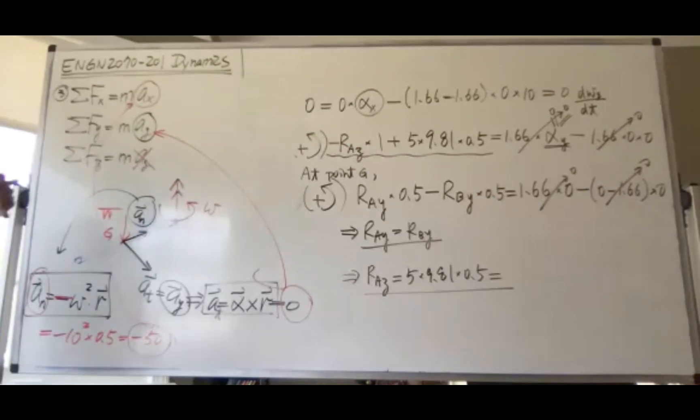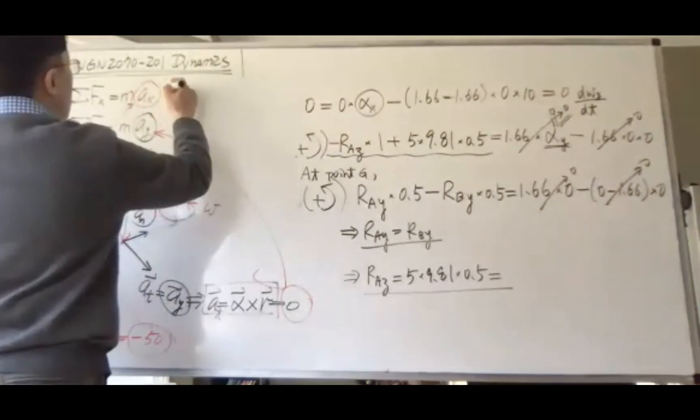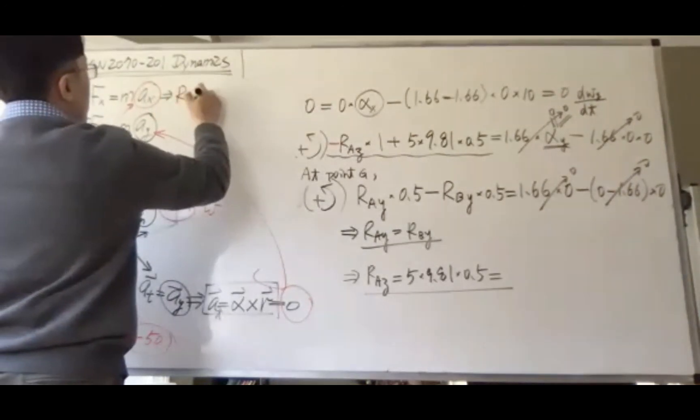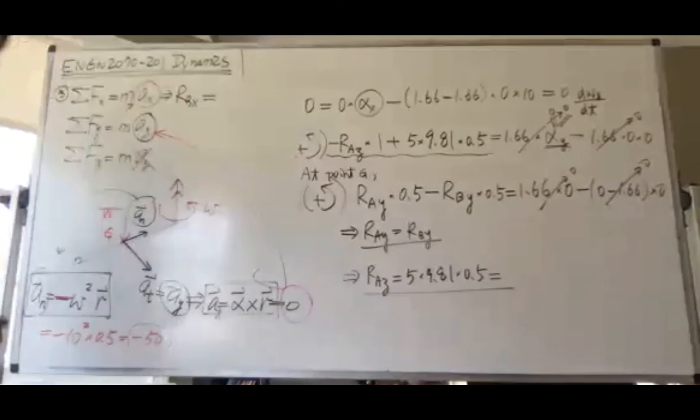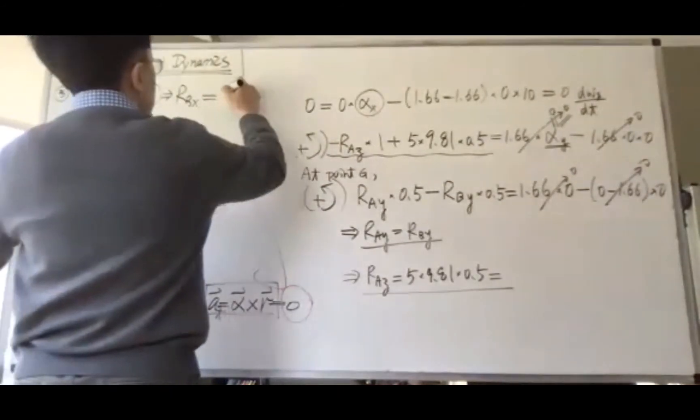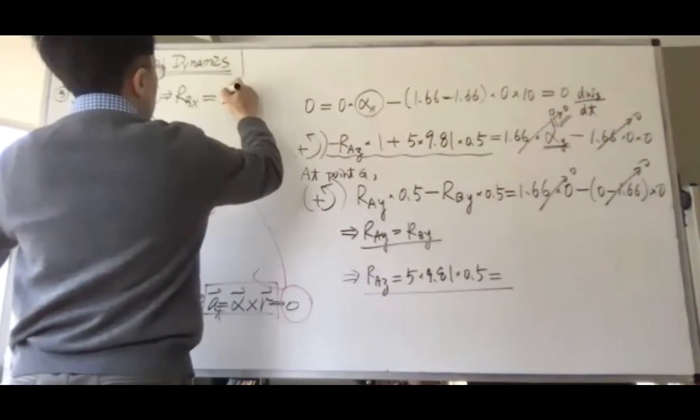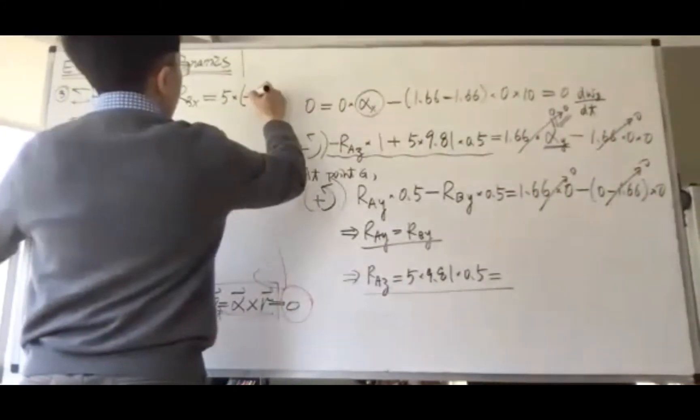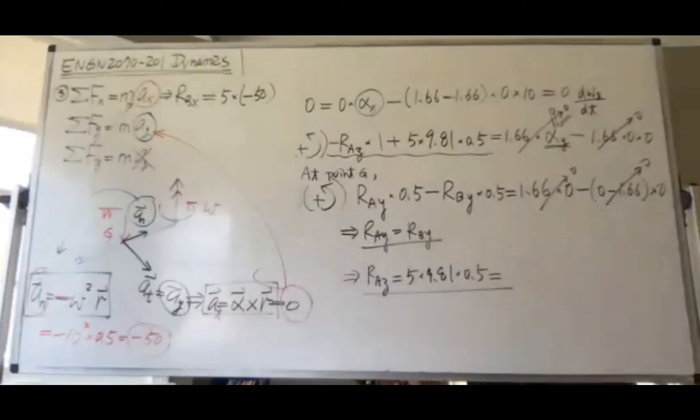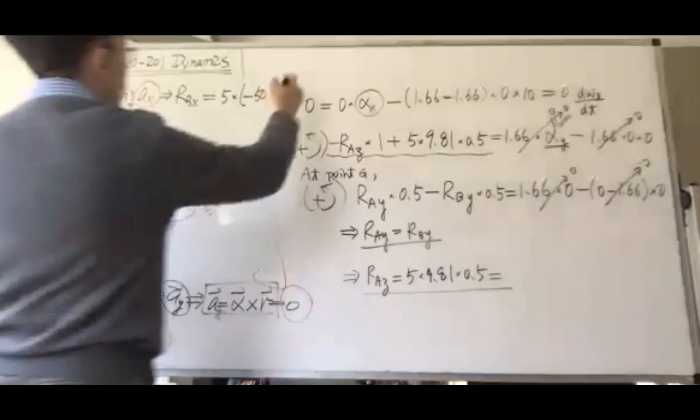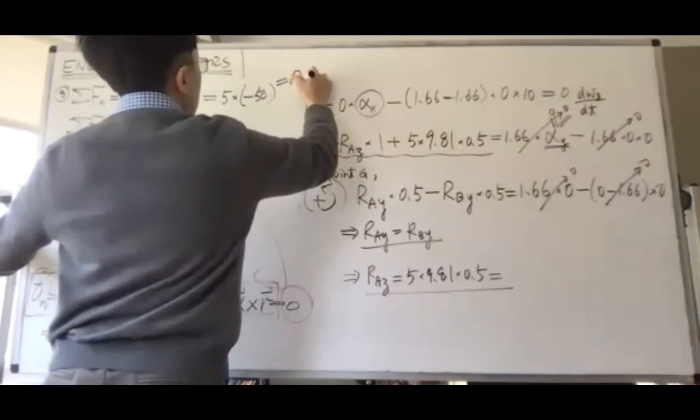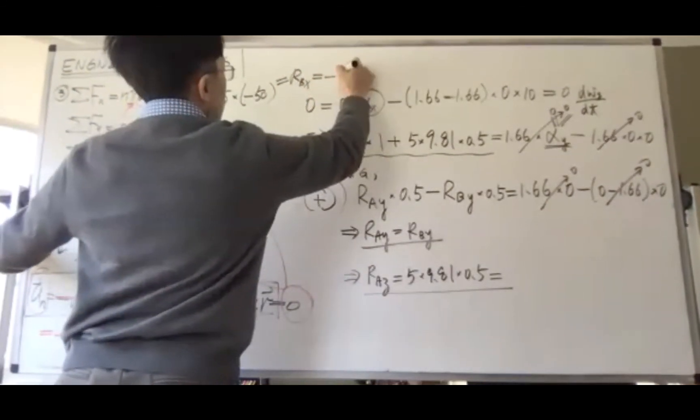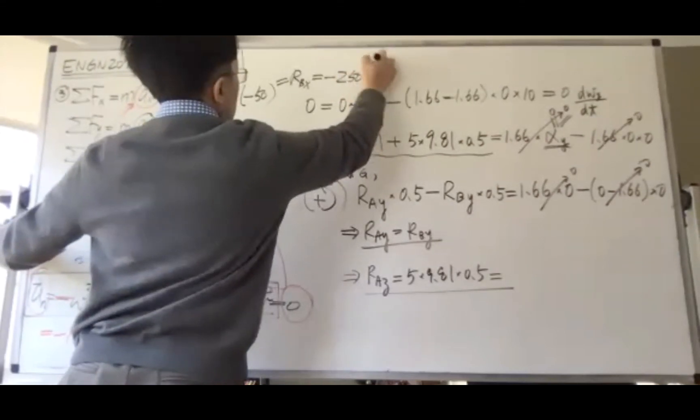From the force equilibrium in the x-direction, we have R_bx equals mass, which is 5, times negative a_x, so that's minus 50. From here, R_bx is actually negative 250 Newtons.